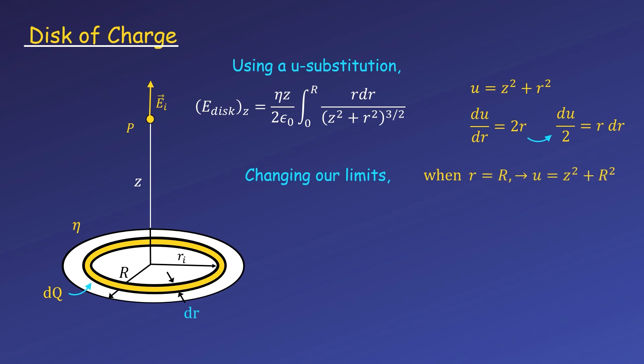We can also change our limits of integration to be in terms of u. When little r is equal to the radius capital R, u is equal to z² plus R². And when little r is equal to 0, u is equal to just z².